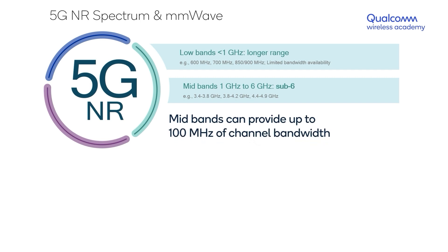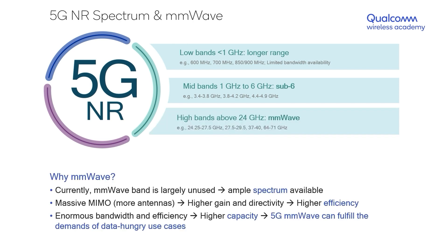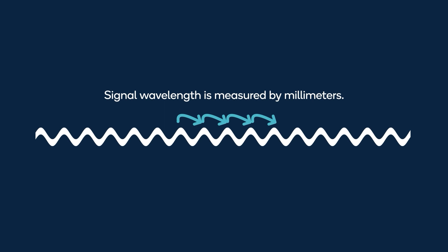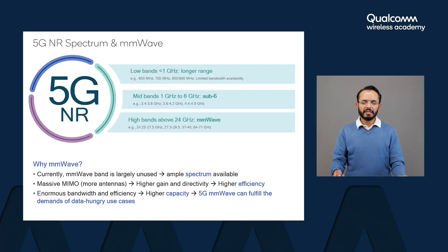But if you have an application that requires even more bandwidth — such as 200, 400, or 500 megahertz of continuous bandwidth — 5G allows a third frequency spectrum known as millimeter wave. It is a frequency spectrum above 24 gigahertz, and it is called millimeter wave because at such high frequencies the signal wavelength is approximately on the order of a few millimeters, which is why these bands carry that name.